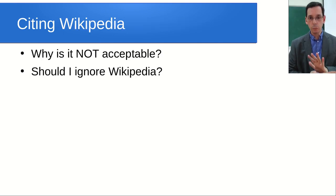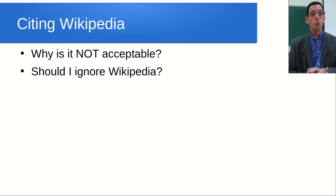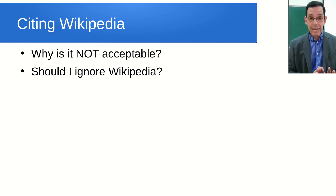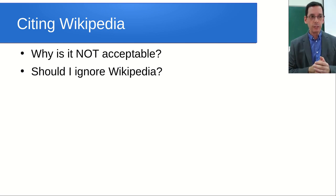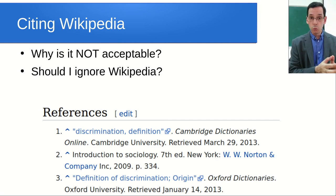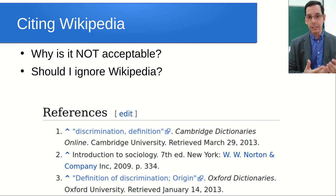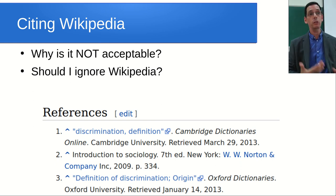Why should you not cite Wikipedia? University students are told time and time again: don't cite Wikipedia. Why? Because anybody can edit it, and as long as anybody can edit it, we can't really be sure it is trustworthy. It doesn't mean you should ignore Wikipedia - it is a fantastic resource. But when you're reading something on Wikipedia, go down to the references section and find the original source. That is what you should be citing. Actually read it before you cite it.